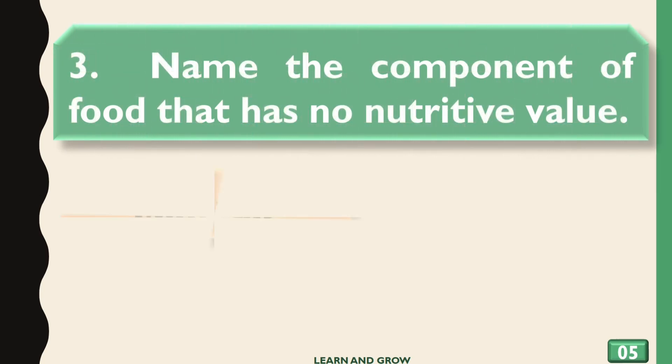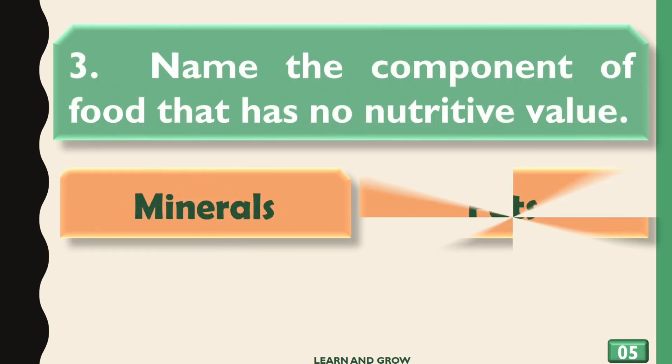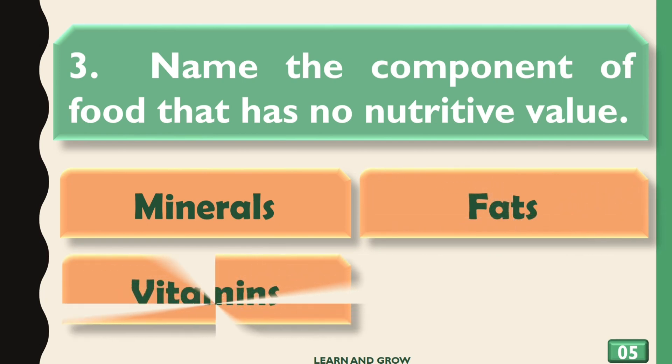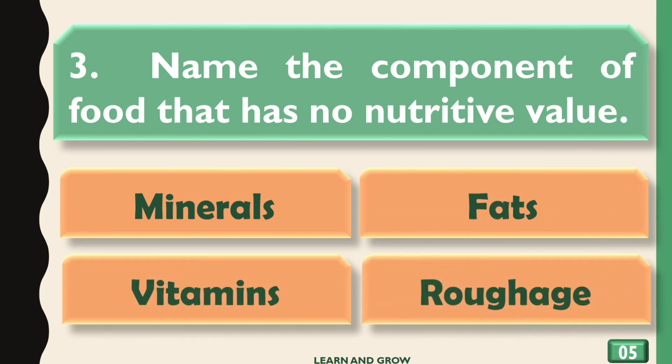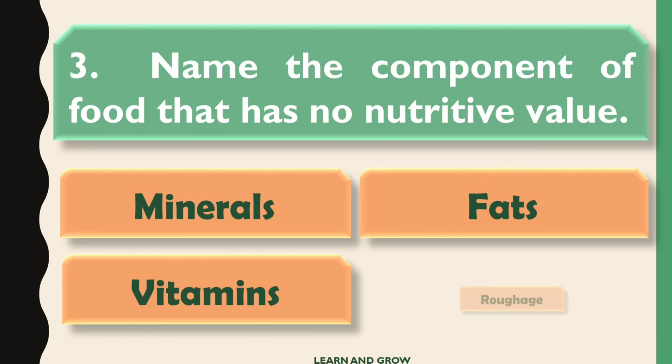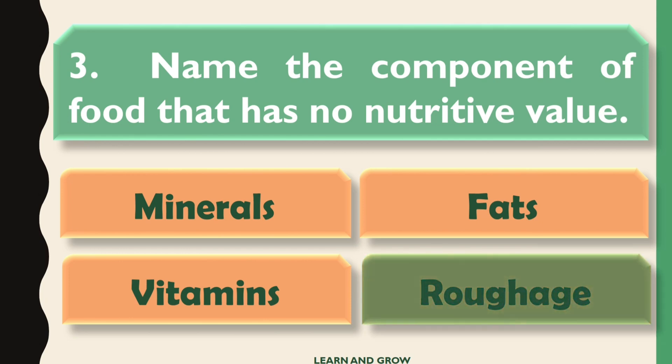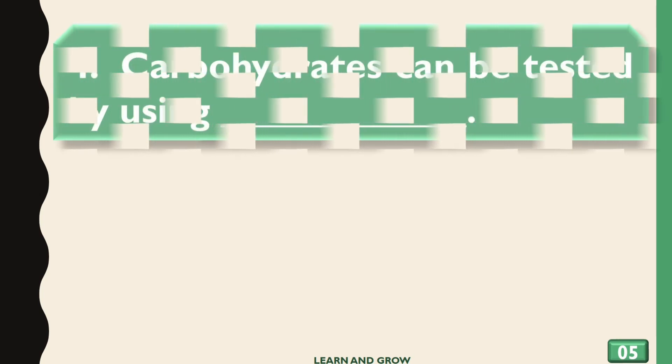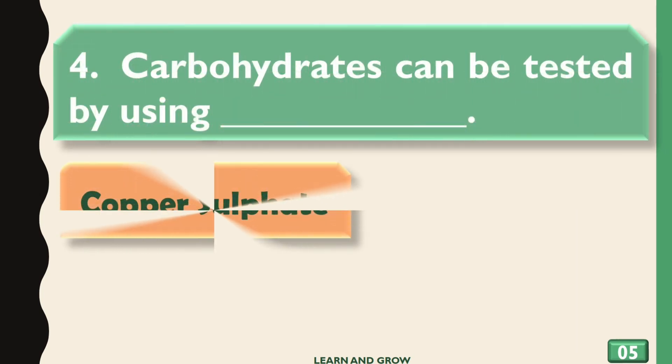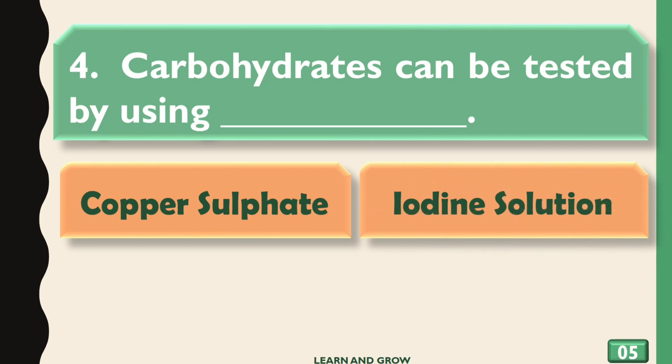Name the component of food that has no nutritive value. Options are A) Minerals, B) Fats, C) Vitamins, or D) Roughage. The right answer is Roughage. Carbohydrates can be tested by using: options are A) Copper Sulfate, B)...